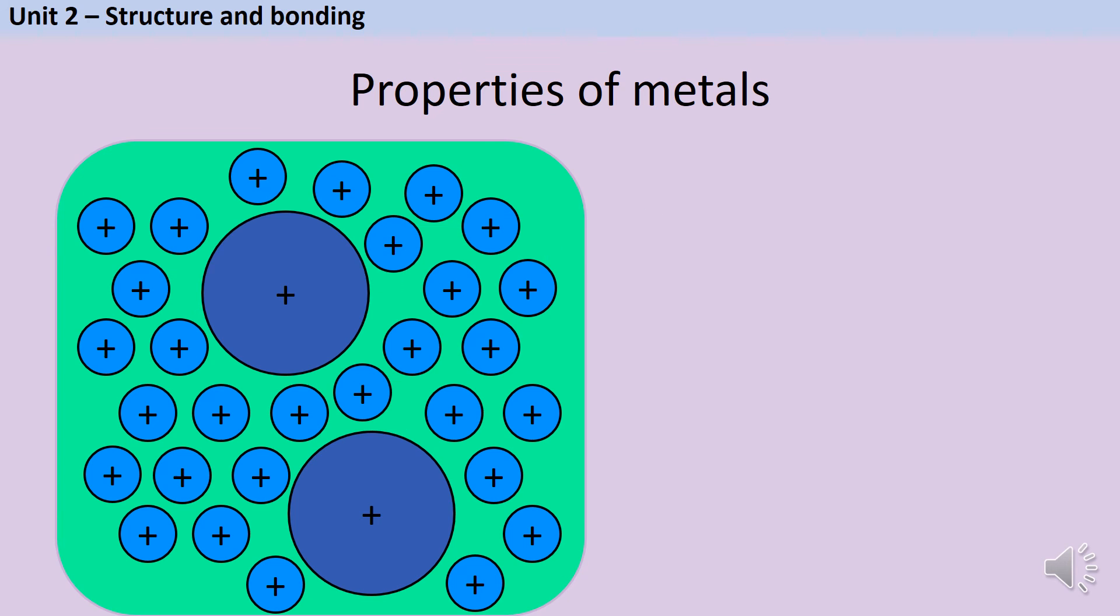Let's compare this to an alloy. Alloys are an example of a mixture. Whereas in a pure metal there are only atoms of one size, in an alloy there are atoms of more than one size because there's more than one element, usually a second metal or maybe carbon.